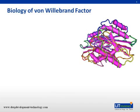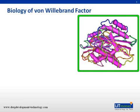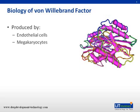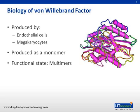In order to understand the underlying state of von Willebrand's disease, one must understand the biology of von Willebrand factor. Here is a crystalline structure of the factor itself. This factor is produced by endothelial cells and megakaryocytes. It is produced as a monomer through cellular manipulation. These monomers are then bound to other monomers forming dimers, and these dimers then bind to other dimers forming multimers. This multimer is the functional state of the factor.